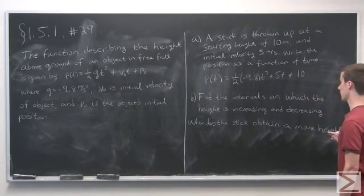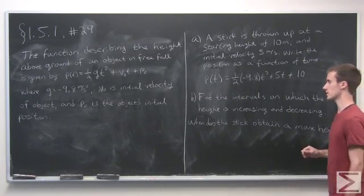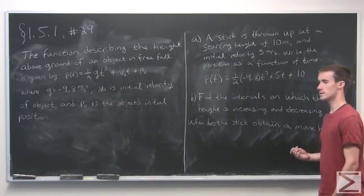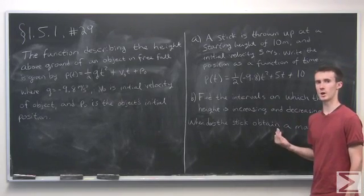Part b asks us to find the intervals in which the height is increasing and the intervals in which it's decreasing. So if its height is increasing, the velocity is going to be positive, in other words, in the upward direction.